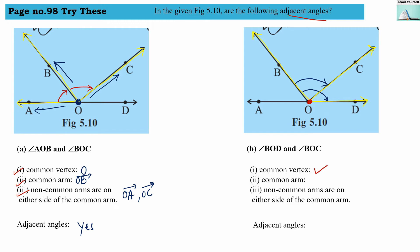Then, common arm. In both these angles, angle BOD is a complete angle. As you can see, this is a complete angle, but angle BOC is a part of this angle BOD. Basically, angle BOC is a part of angle BOD, so they do not have a common arm. That's why non-common arms are also not there. So these angles are not adjacent angles.